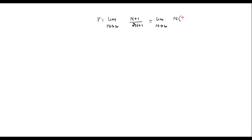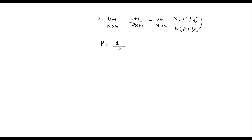I can write this as limit n tends to infinity: on the numerator take n common to get 1 plus 1 over n, divided by, taking n common in denominator, 2 plus 1 over n. As n tends to infinity, 1 over n becomes 0, so the numerator gives 1 and the denominator gives 2. Therefore P is equal to 1 over 2. This is the power of the unit step sequence.